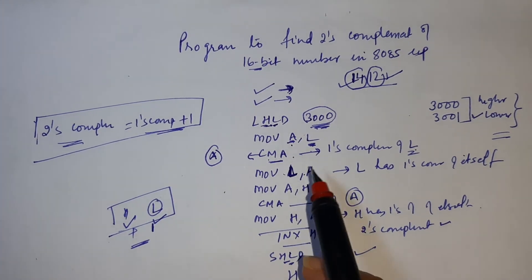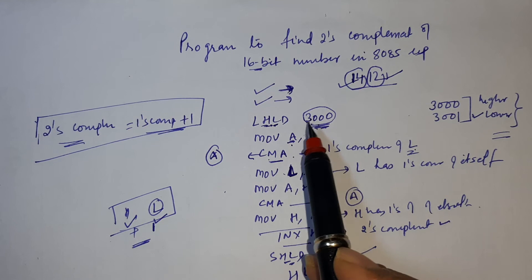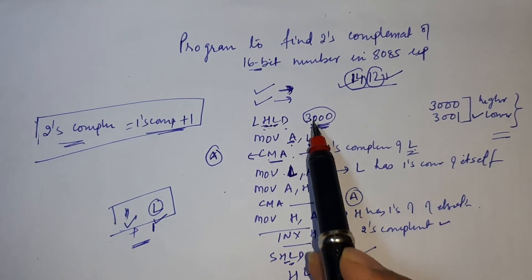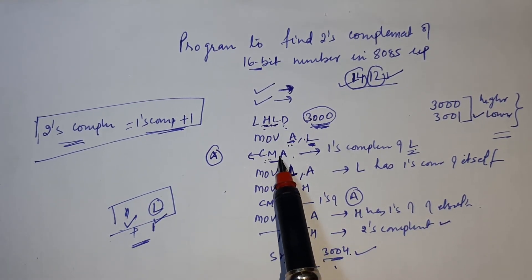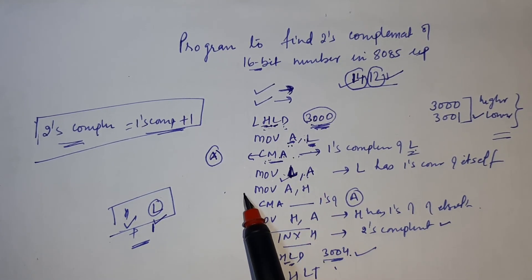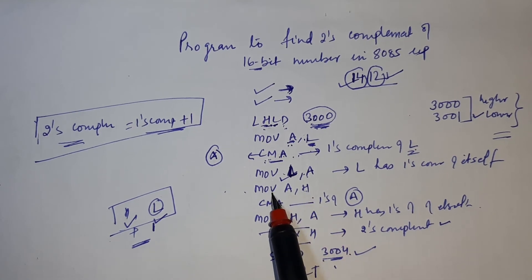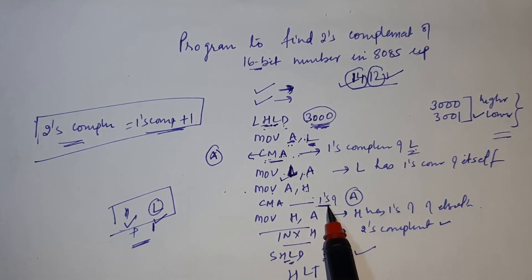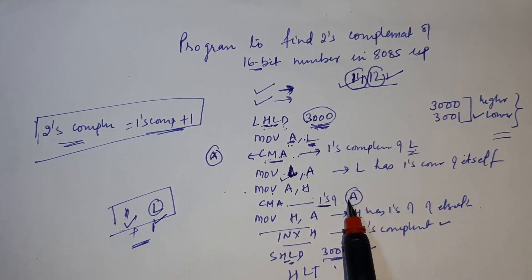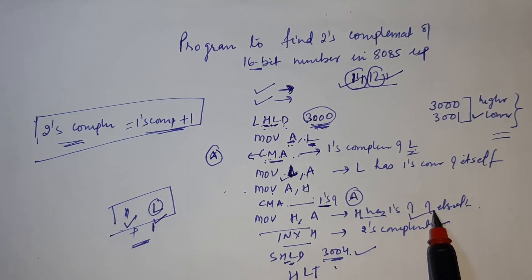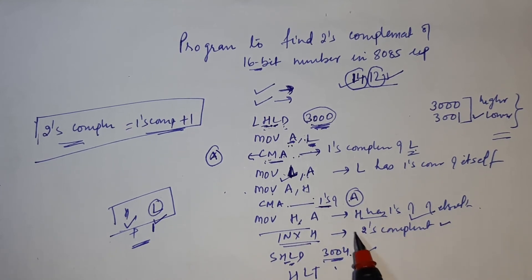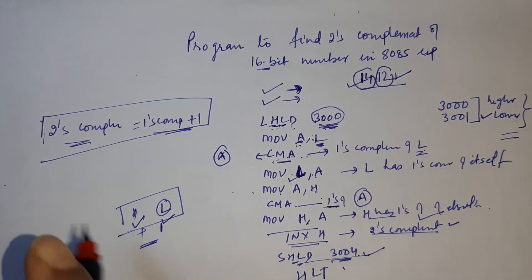To summarize: load the 16-bit number into H and L using LHLD. Move the lower byte into the accumulator, find 1's complement using CMA, save it back to L. Repeat for H. Then INX H adds 1 to the HL pair, giving the 2's complement. Store the result with SHLD.